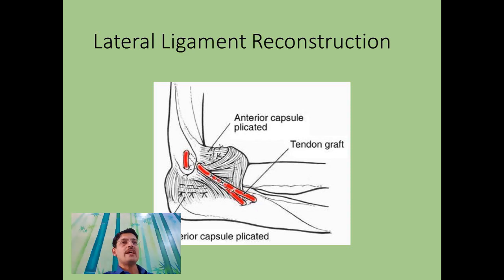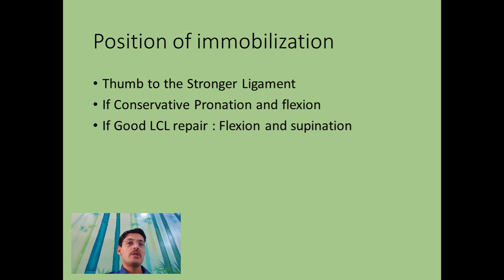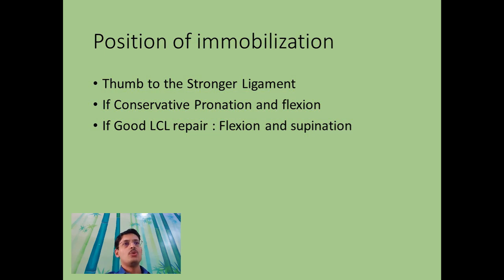The position of immobilization is very important. The thumb should lie toward the stronger ligament. If you have an LCL tear with an intact MCL, you immobilize in pronation. Elbow dislocations are generally unstable in extension and stable in flexion, so stabilize in flexion. If you have performed a good LCL repair without touching the MCL, immobilize in full supination and flexion. This is the philosophy following a well-repaired terrible triad.